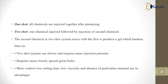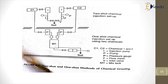The two-shot systems are slower and require more injection pressure, but provide more control over setting time, low viscosity, and absence of particulate materials. In the figure, you can see both the two-shot chemical system and the one-shot chemical system illustrated.